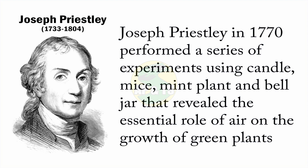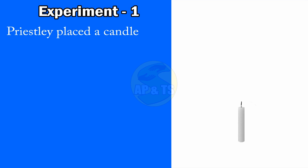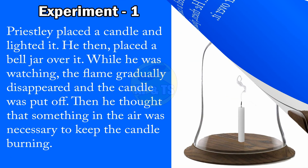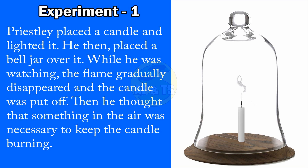Let us see Experiment Number One. Priestley placed a candle on the table and lighted it. Then he placed a bell jar — a glass jar in the shape of a bell — over the candle. While observing, the flame gradually disappeared and the candle was put off. He then thought that something in the air was necessary to keep the candle burning.